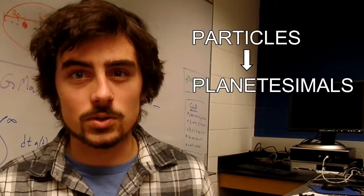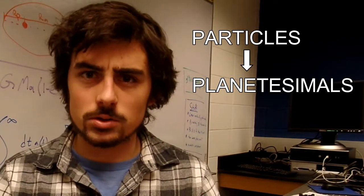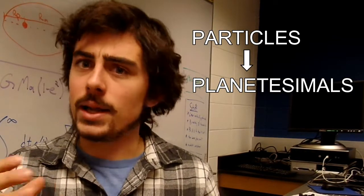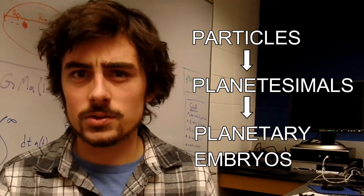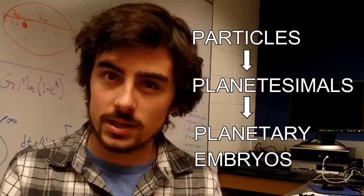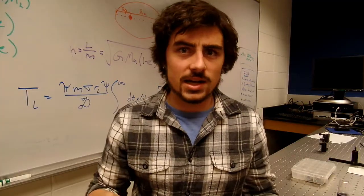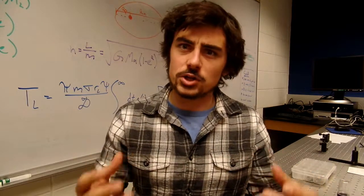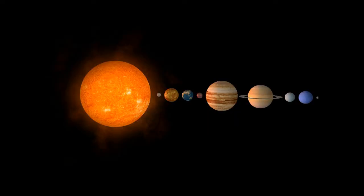Over time, these collisions add up, with particles forming planetesimals, objects that are larger than particles but smaller than planets, and planetesimals form planetary embryos, objects larger than planetesimals but still not planets. After a long time, these actions lead to the formation of a solar system with planets orbiting around a central star.